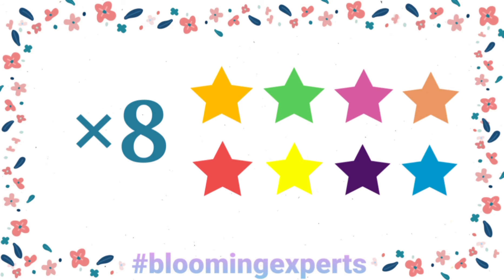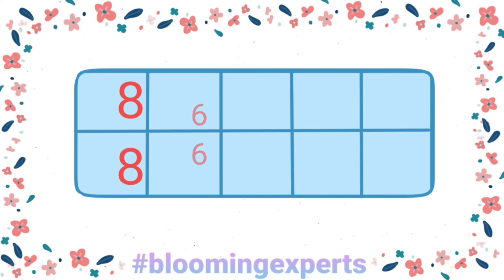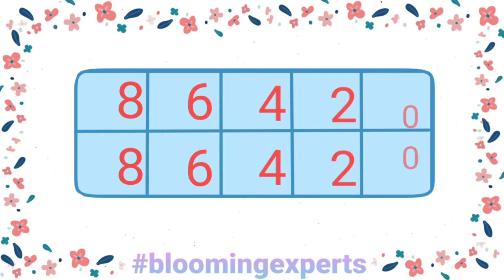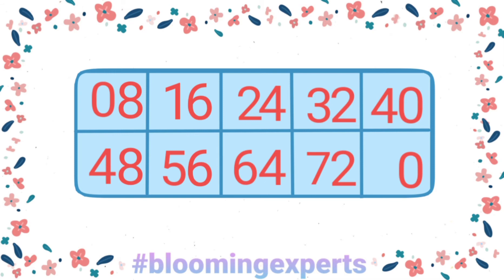Let's now write the 8 times table together. Starting with the ones digits: 8, 6, 4, 2, and 0. And now for the tens digits: start with 0, 1, 2, 3, 4 — then again starting with 4: 4, 5, 6, 7.